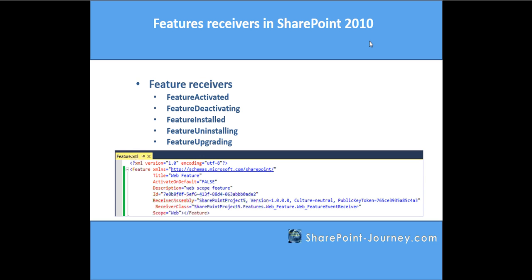Similarly, if you want to perform something in feature installed or feature uninstalling, you can do that. One more receiver is feature upgrading — let's say you have functionality provided with a feature and you are upgrading it and want to add a few more capabilities to the existing feature; then you will use the feature upgrading event.